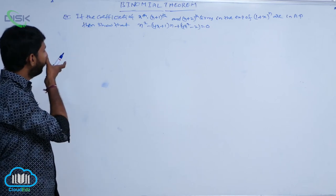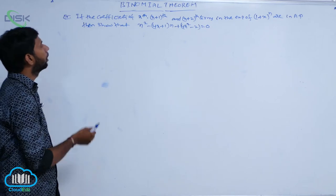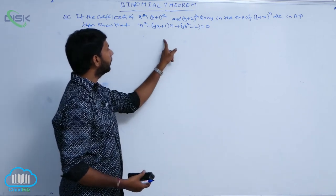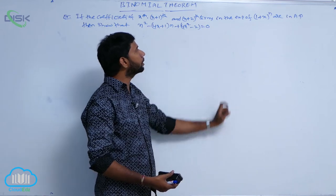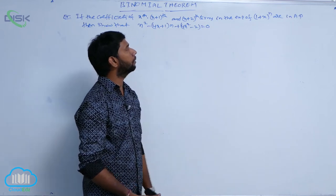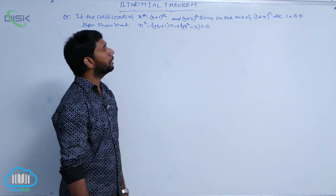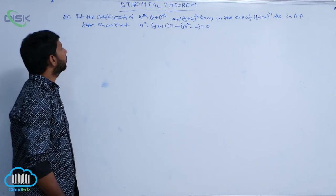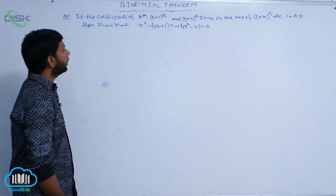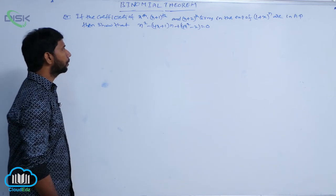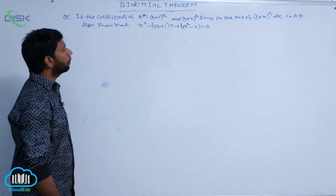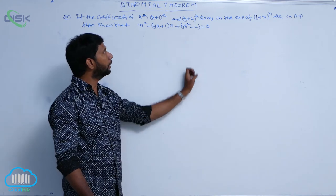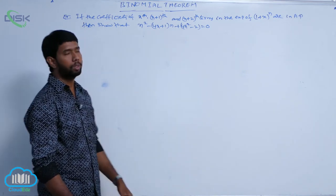In the next example, the coefficients of the r-th term, (r+1)-th term, and (r+2)-th term in the expansion of (1+x)^n are in A.P. Then show that the relation is n² - (4r+1)n + 4r² - 2 = 0.